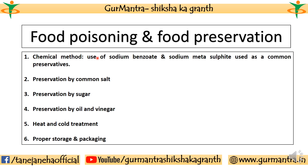Some methods of food preservation are given here. Food poisoning is very common — food gets contaminated and poisoned due to microorganisms. But we can preserve food through preventive measures. Prevention is better than cure. Particularly in the context of food preservation, some treatments are given. The first is the chemical method, which uses sodium benzoate or sodium metabisulphite as a preservative. Preservatives are substances used to keep things safe for a long period of time.